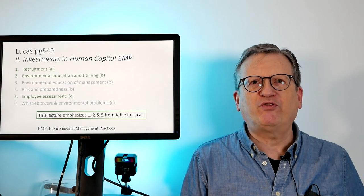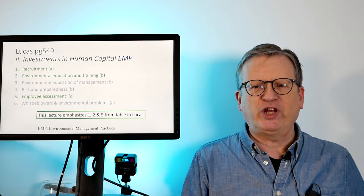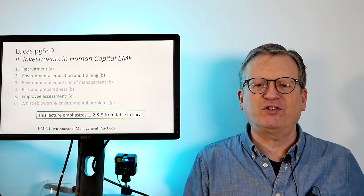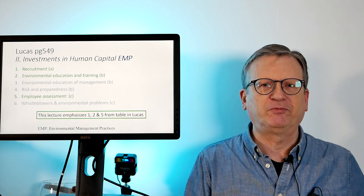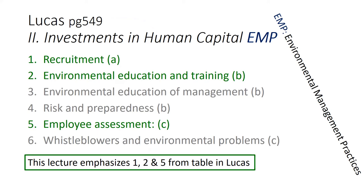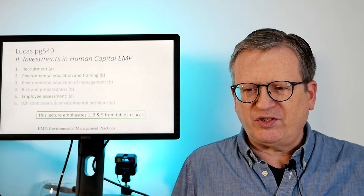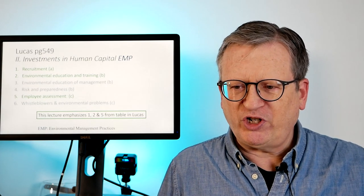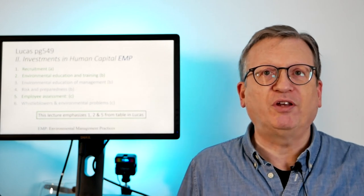On page 549 in her table, under Roman numeral II — investments in human capital environmental management practices — Lucas lists recruitment as item A. Under B, she has environmental education and training, environmental education of management, and risk and preparedness. Under C, employee assessment and whistleblowers and environmental problems. The rest of this lecture deals with items one, two, and five from the table: recruitment, environmental education and training, and employee assessment.